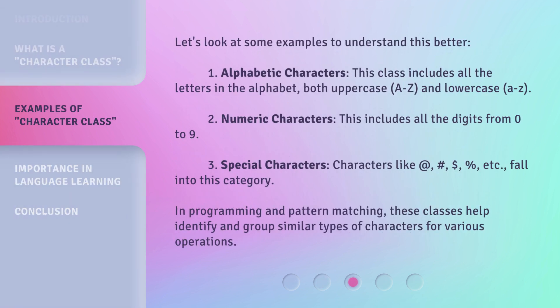Let's look at some examples to understand this better. 1. Alphabetic Characters: this class includes all the letters in the alphabet, both uppercase (A to Z) and lowercase (a to z). 2. Numeric Characters: this includes all the digits from 0 to 9. 3. Special Characters: characters like at, hash, dollar, percent, etc. fall into this category. In programming and pattern matching, these classes help identify and group similar types of characters for various operations.